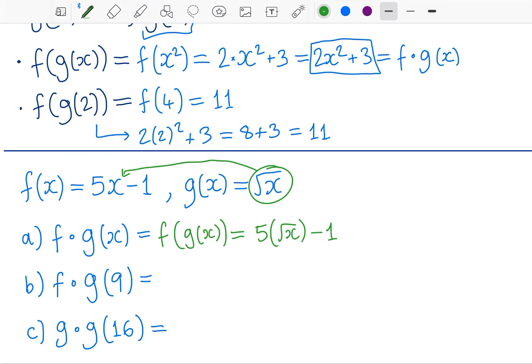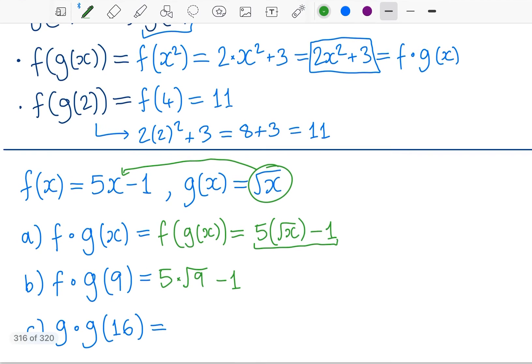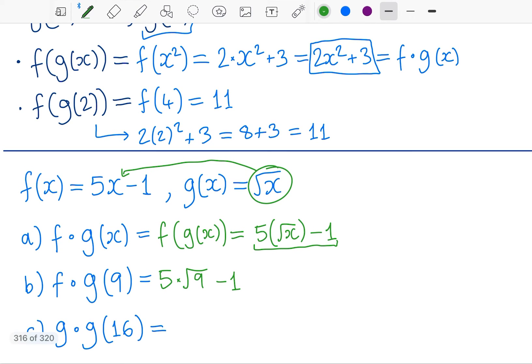Again, I'm trying to, in part b, plug in a number, and I have the final function, so I'm just going to plug nine into that. So five times square root of nine minus one. Again, I could plug nine into g, get an answer and plug that into f as well. That would be the other way of doing it. Five times three minus one is 14.